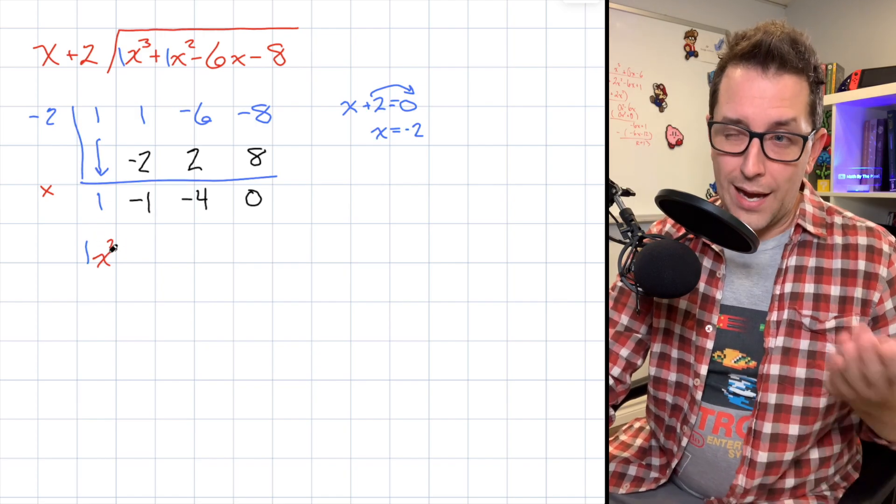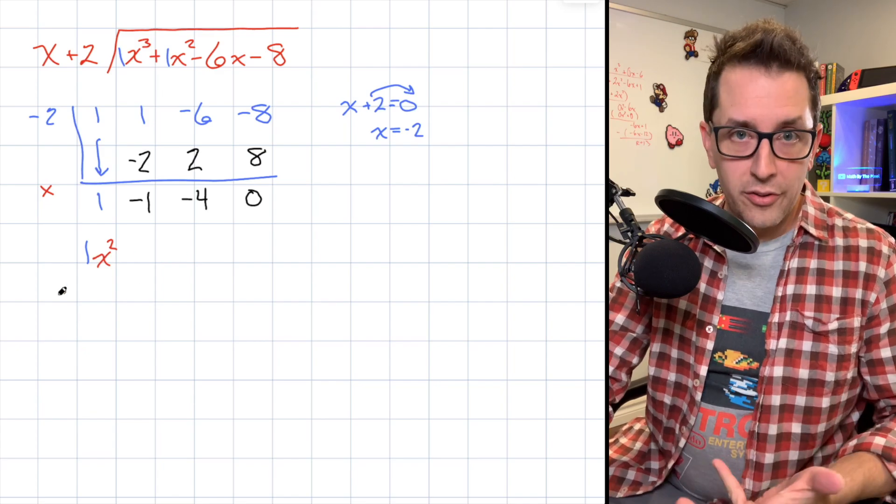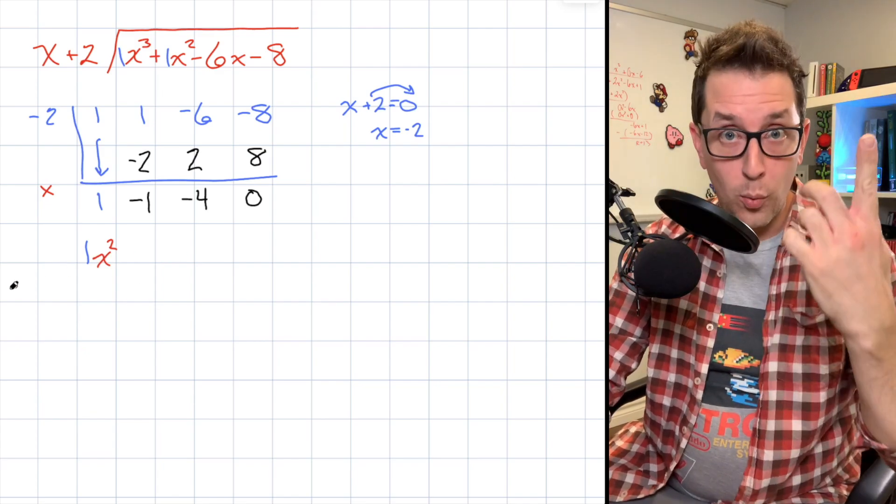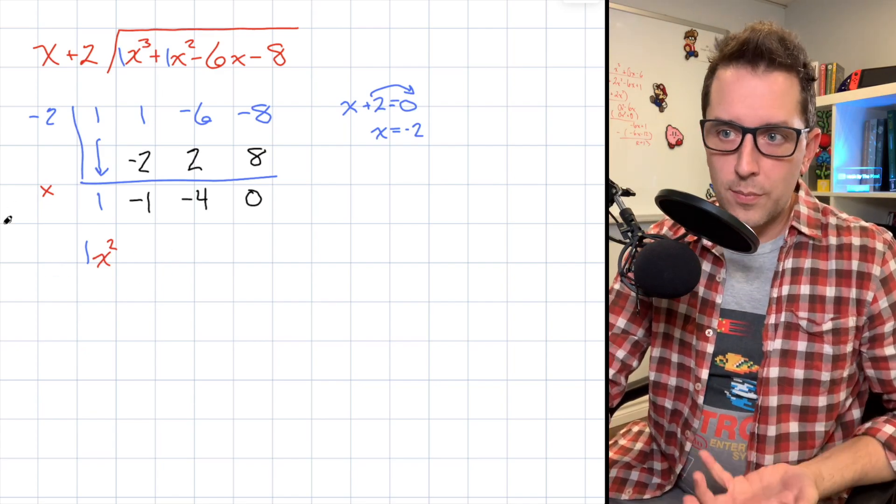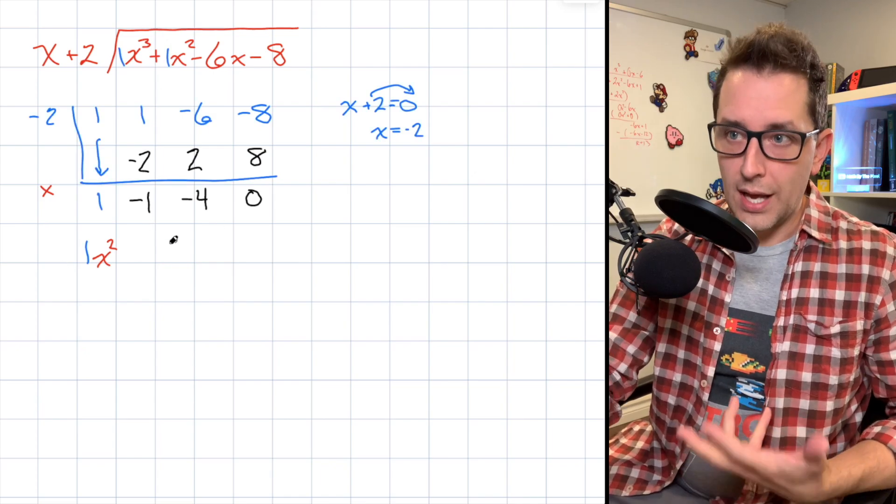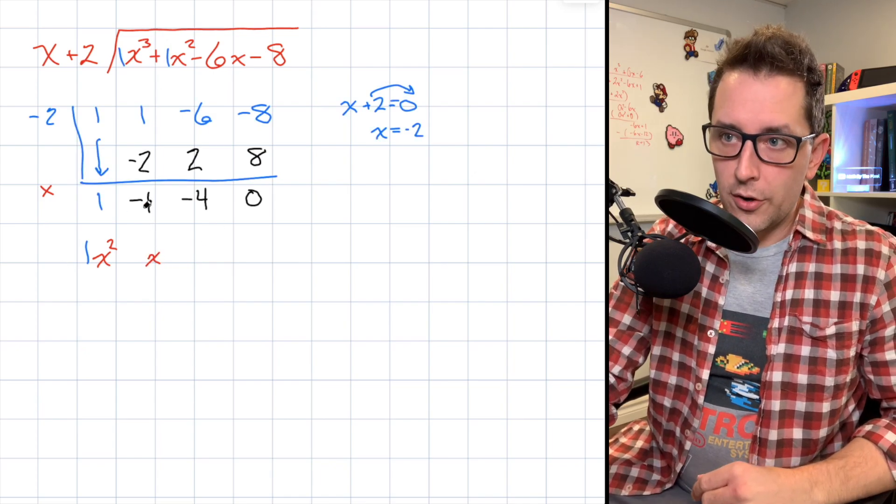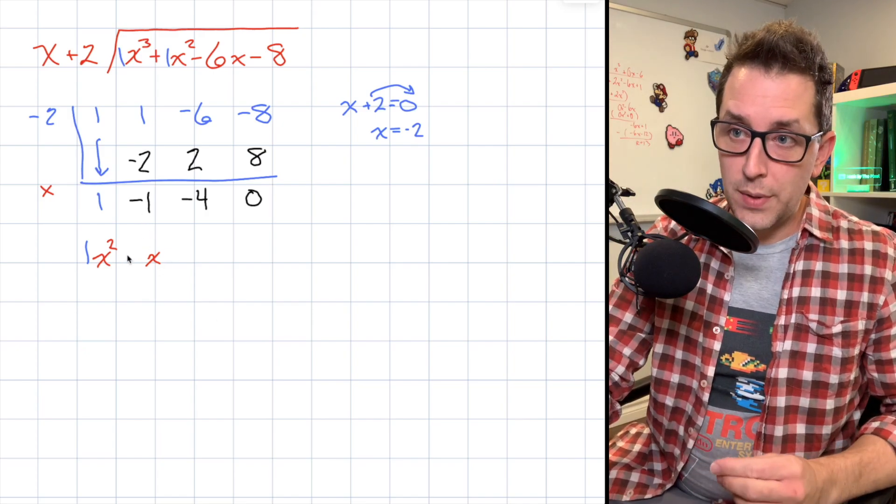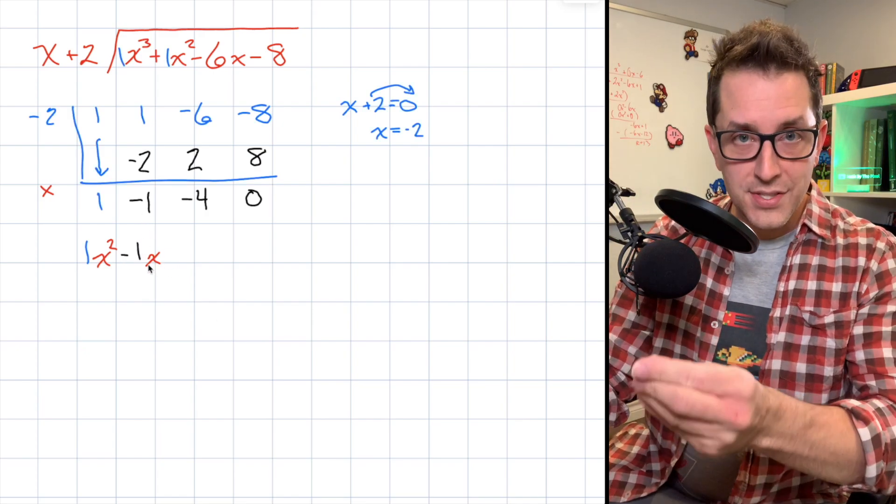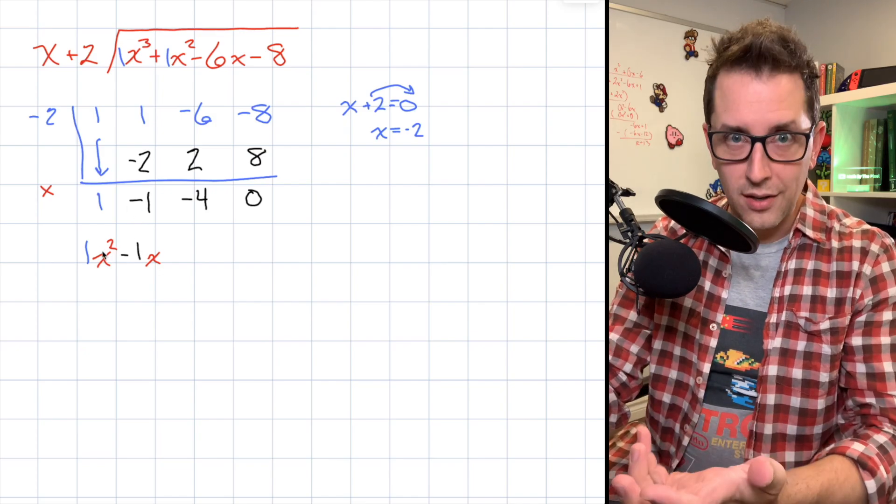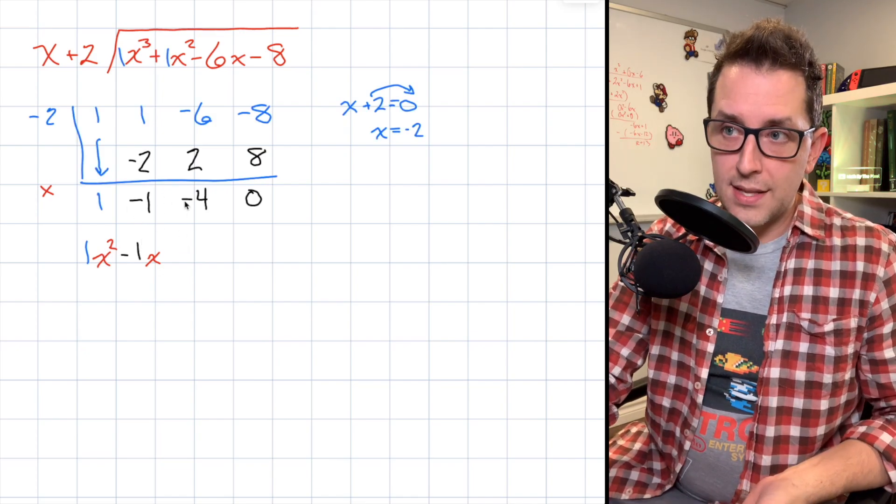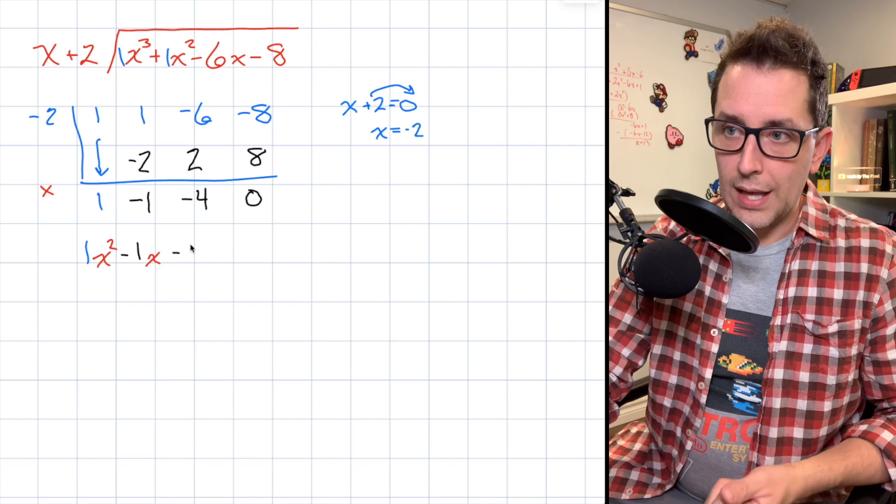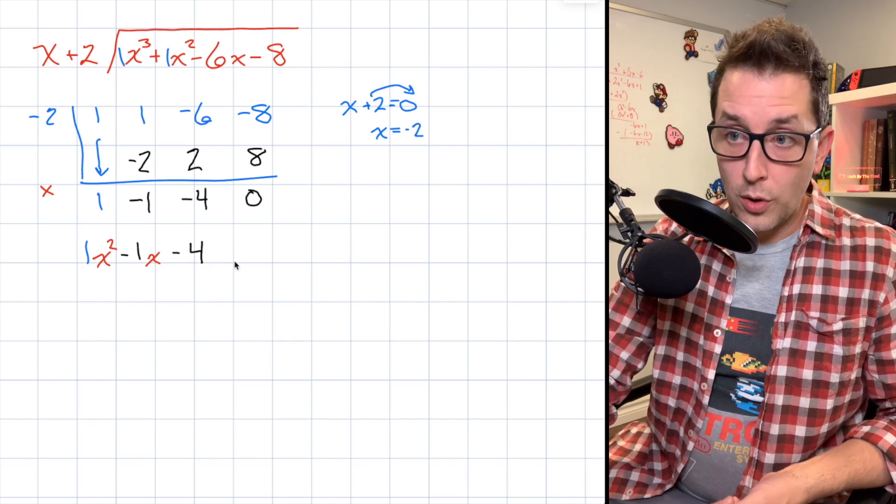Now, the next term after x² will be x, if I'm decreasing in power by 1 each time. So my next term will be x, right there, underneath that -1. And the same rule applies here. That -1 is actually going to be the coefficient on that x term. Again, I've just written it in black so you can see it's that same -1.